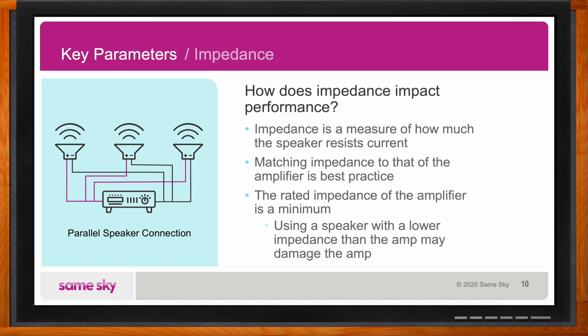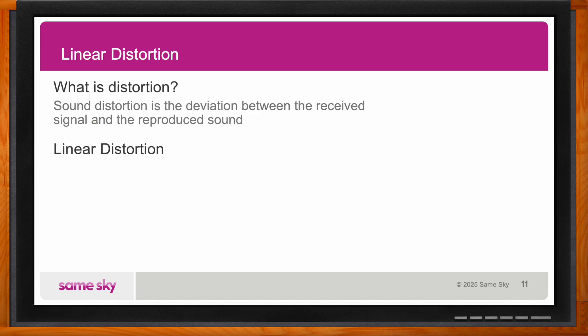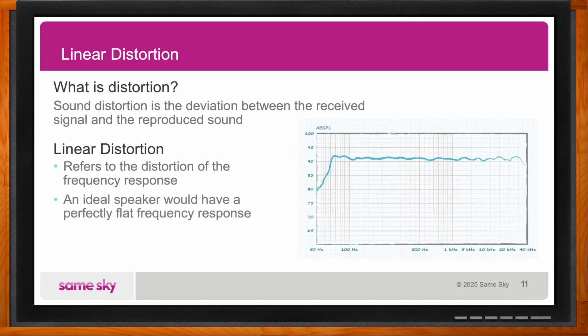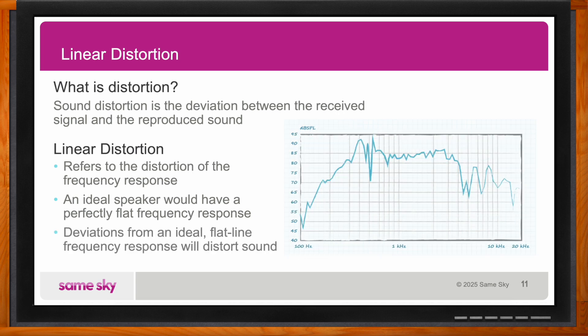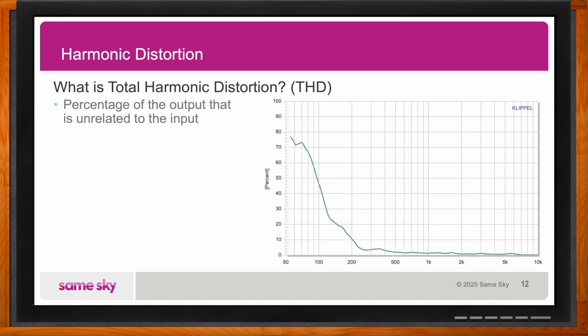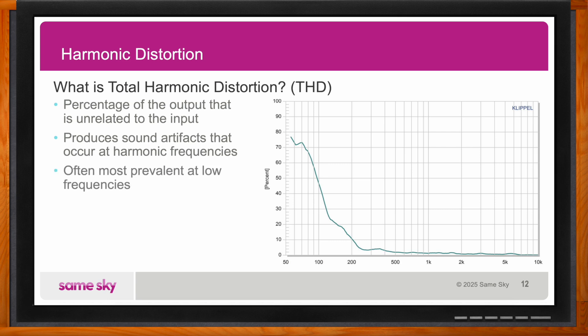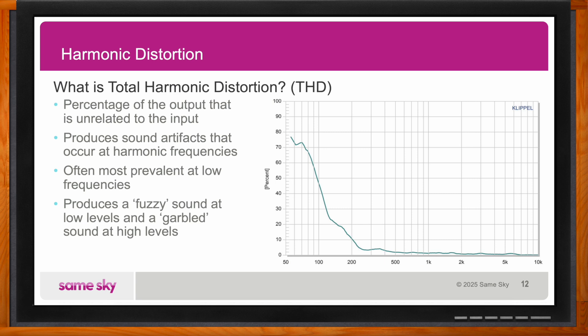Distortion can also play a role. Sound distortion is the deviation between the received signal and the reproduced sound, and it can affect the quality of the sound the speaker produces. One form is linear distortion, which refers to distortion of the frequency response — this results in some frequencies being louder than others. There's also harmonic distortion, often parameterized as total harmonic distortion or THD, which refers to sound artifacts that occur at frequencies that are a multiple of the received signal. This can result in a fuzzy sound quality at low levels and a garbled quality at high levels.